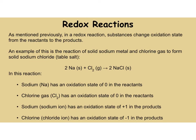Now that we know about oxidation states, we can talk about redox reactions themselves. In a redox reaction, substances change oxidation states from the reactants to the products. An example is the reaction of solid sodium metal and chlorine gas, which forms solid sodium chloride. Because sodium is just a solid element by itself, it's going to have an oxidation state of 0, as is chlorine because it's a diatomic gas. When they form a compound, sodium is plus 1 and chlorine is minus 1. That's how the ionic compound works.